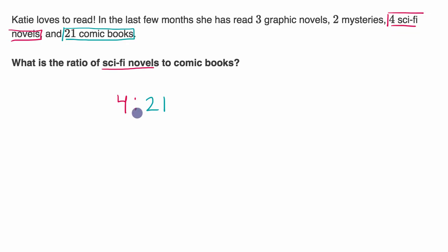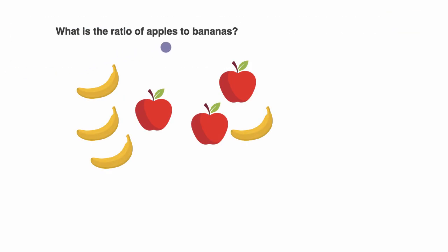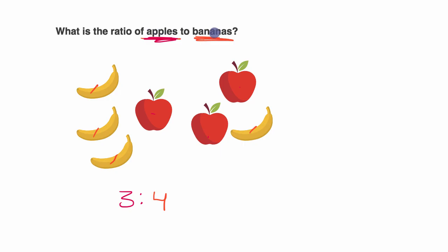Let's do one more example. What is the ratio of apples to bananas? There are one, two, three apples. So for every three apples, how many bananas are there? There's one, two, three, four bananas. So the ratio of apples to bananas is three apples for every four bananas.